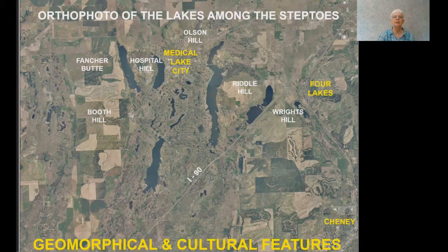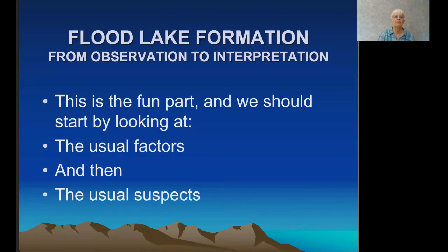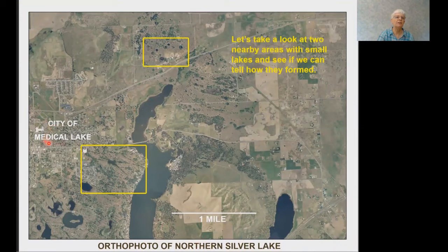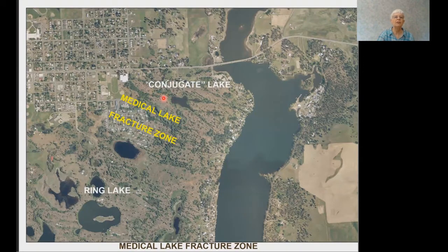This is an orthophoto map of the lakes among the Steptoes region — the Steptoes are in white, the towns in yellow. From here we're going to look at flood lake formation, starting with smaller lakes divided into two categories: circular versus irregularly shaped. This irregularly shaped lake is in the Medical Lake fracture zone, a series of fractures forming a conjugate fracture system. A 30-60 degree fracture zone is the way fractures naturally form, and it shows up very nicely in this particular set. Note what we call a conjugate lake, formed by plucking basalt at the intersection of two fracture angles.